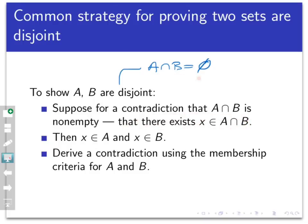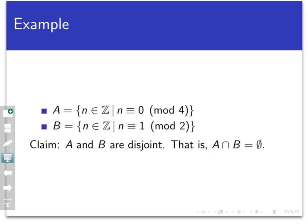So the intersection must be empty. Let's put that to work with another example involving integer congruence. Let A be the set of all integers that are 0 mod 4, and B the set of all integers that are 1 mod 2. We're going to claim that A and B are disjoint — that is, that their intersection is empty.